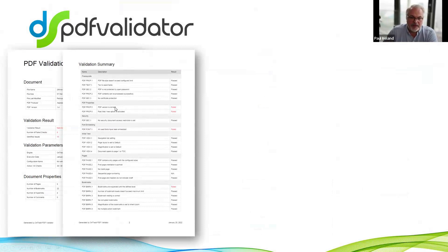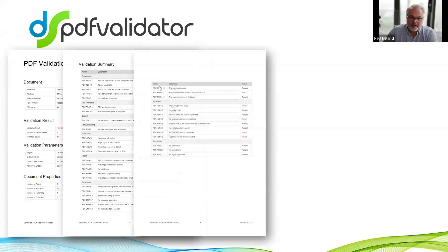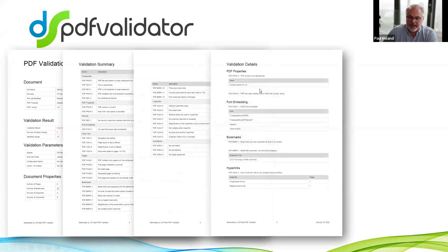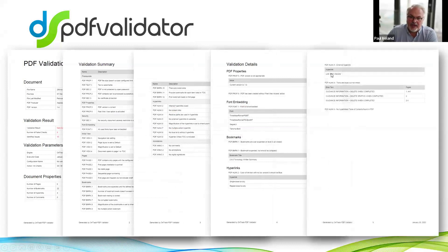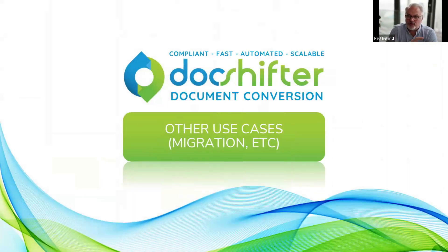You get a summary of all checks run — whether they passed or failed — and where they failed, you get details: what fonts weren't embedded correctly, which bookmarks have issues, which hyperlinks are the wrong color, where you have text that's blue but isn't a hyperlink, hyperlink issues, and so on. All of those are identified in the report for you to fix. Again, some of those issues can be automatically fixed as well.